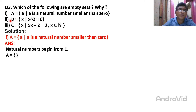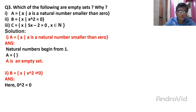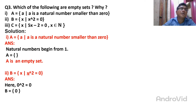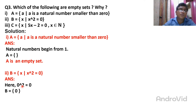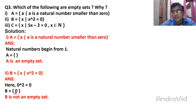Now the second problem. Set B is the set of X such that X squared equals 0. Here, they have not said it is a natural number. So we write X = 0, because 0 squared equals 0 × 0 = 0. So the element 0 is there, and it is not an empty set.